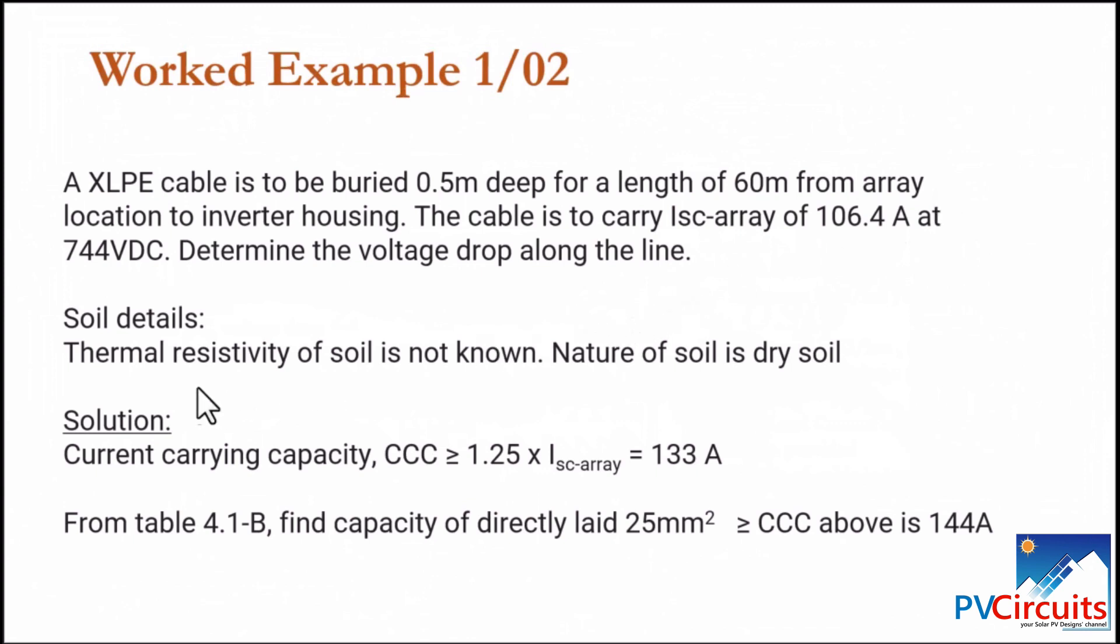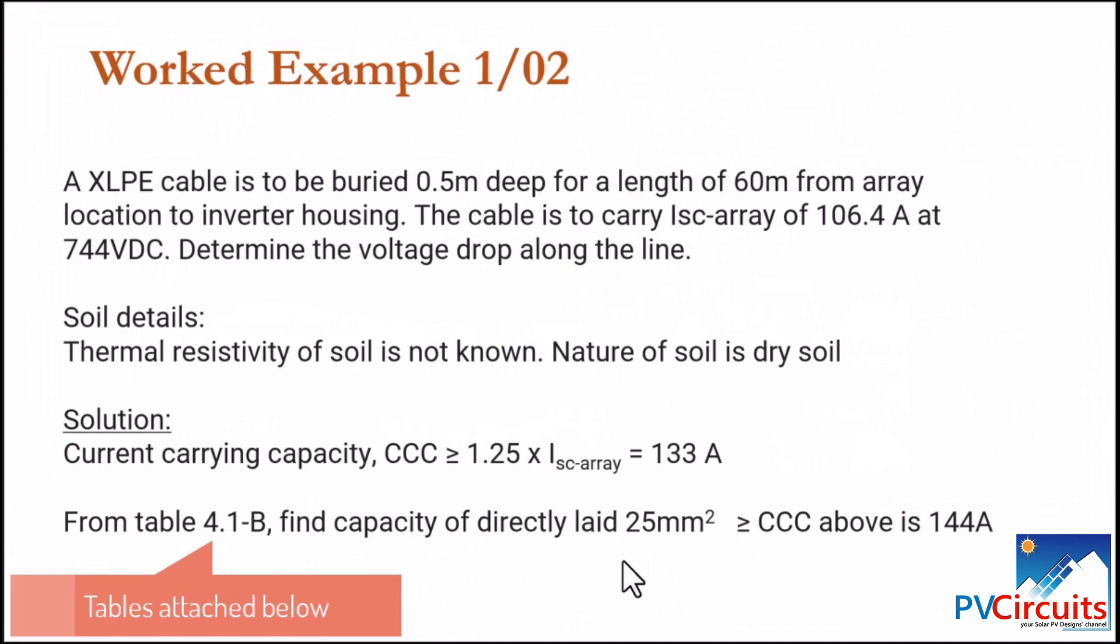We do that by using this equation here that the current carrying capacity is greater or equal to 1.25 times the current that is being carried by the cable, which is 106.4. And that gives us 133 amps. We use this figure and move to table 4.1B. We find that the cable that can carry this current is a cable of 25 mm square. And the current that it can safely pass is 144 amps.